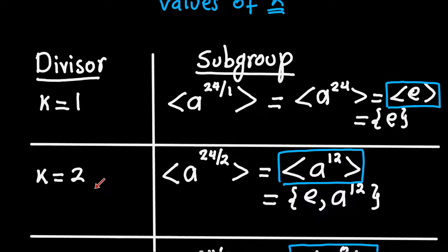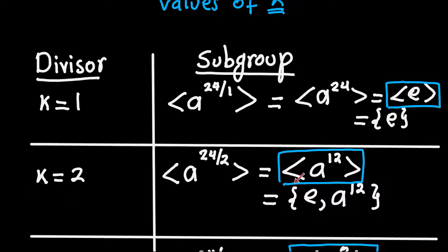For K equals 2, the subgroup is generated by A to the 24 divided by 2, which is A to the 12th. Taking powers: A to the 12th to the first power is A^12, and A to the 12th squared gives A to the 24, which is the identity. So we stop there — this subgroup only has two elements.